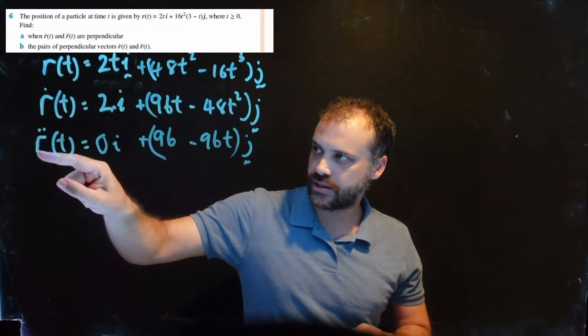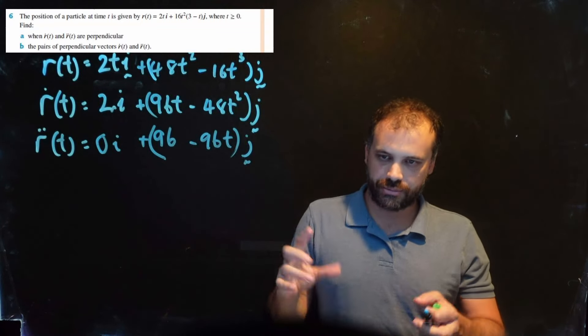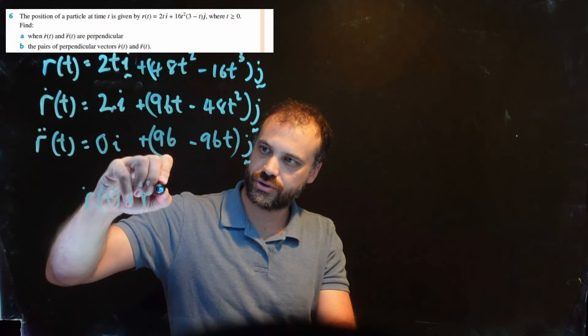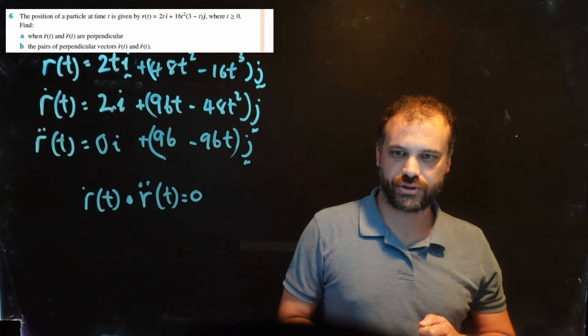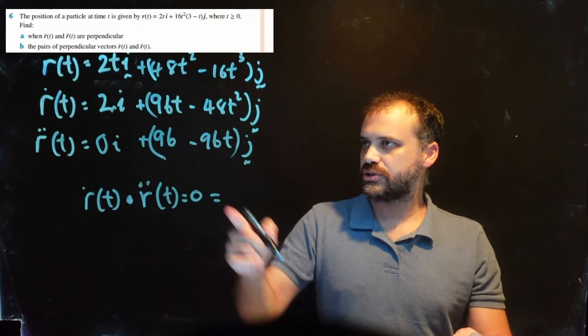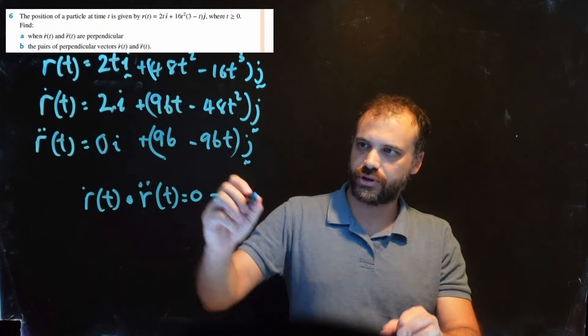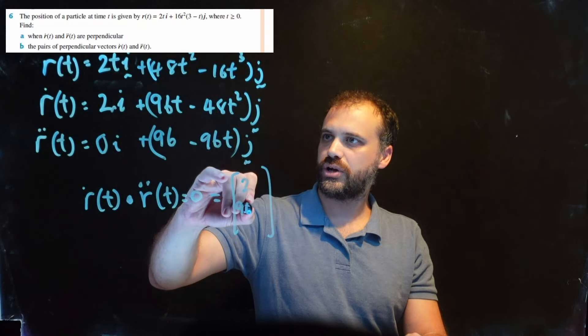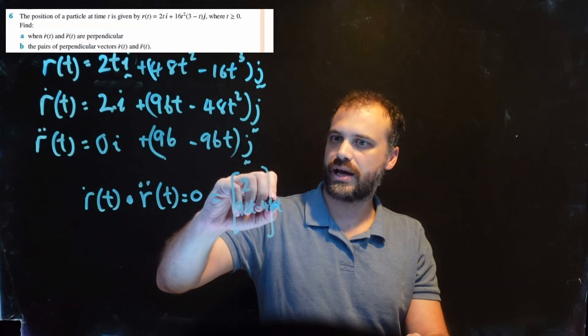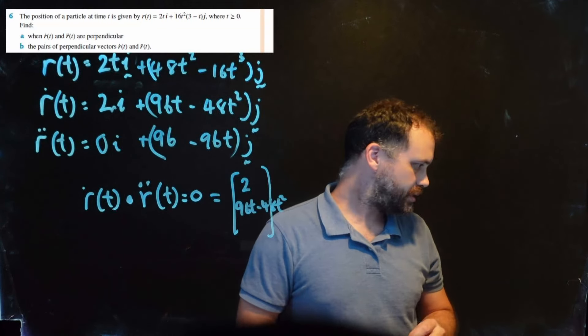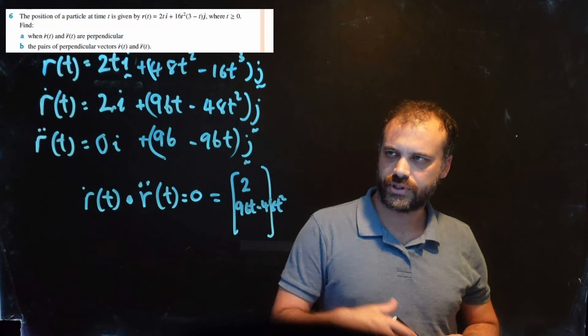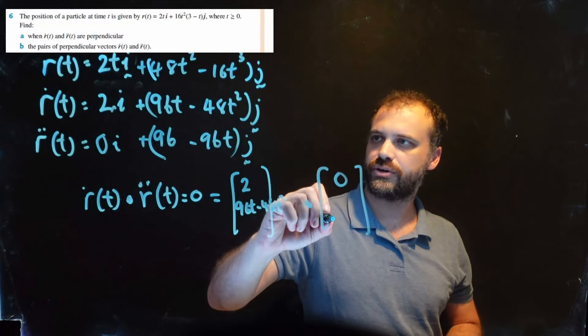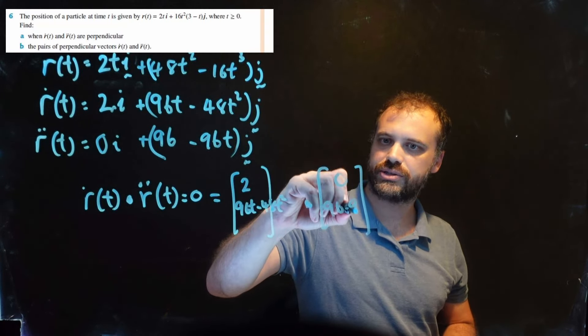So we have a velocity function and an acceleration function. Remember, we want r'(t) dot r''(t), the dot product of those two, to be equal to 0. Let's do the dot product. Easier if I write them as columns. So we're going 2 and 96t - 48t². That's our velocity function. And then we do the dot product with this one: 0 and then 96 - 96t.